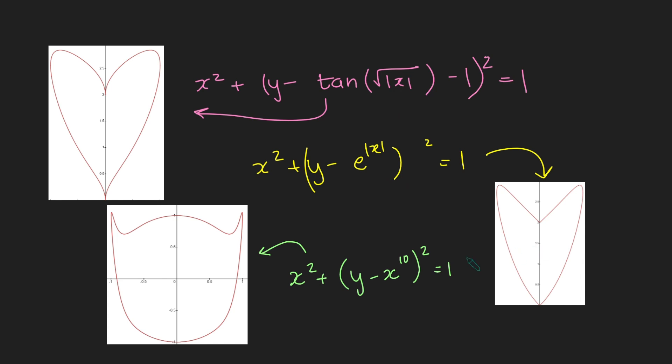And if I change it to x to the power of 10, you get this shape here, which looks a little bit like a Batman mask, I think. But what's really interesting is using the exact same technique, you can show that the areas of all of these are pi. So I encourage you to have a play with maybe a graphing calculator and change this function to other functions and see what other weird shapes you can create, all of which have area pi.